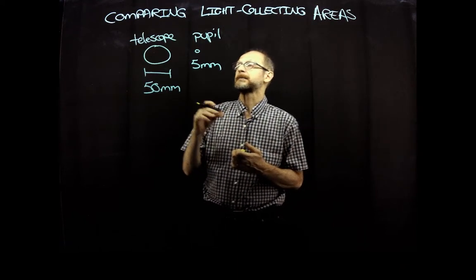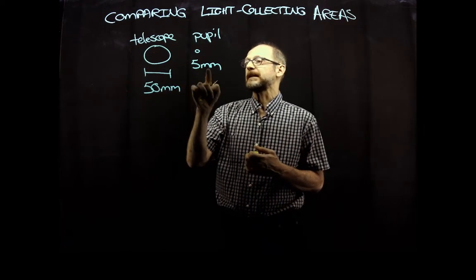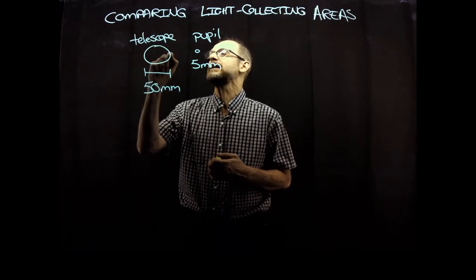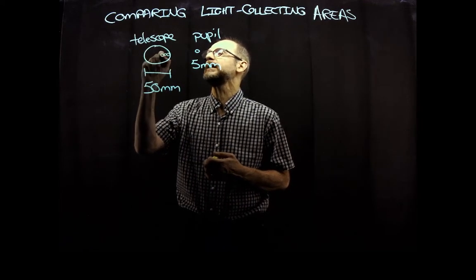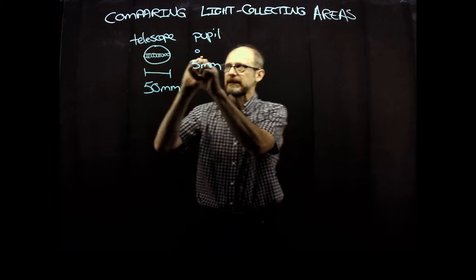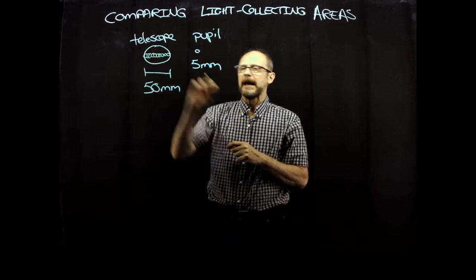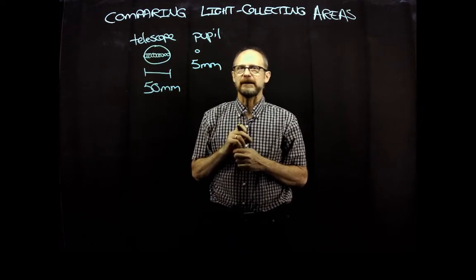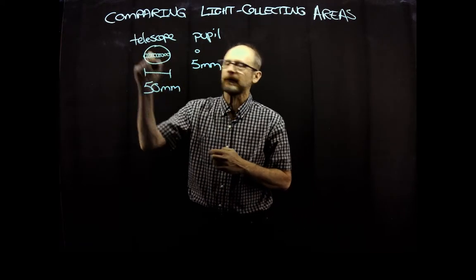It's not that because if this is 50 and that's five, that means I can take 10 of these pupils: 1, 2, 3, 4, 5, 6, 7, 8, 9, 10. And I could line them up and cross one diameter of that circle. But that doesn't account for all the area.